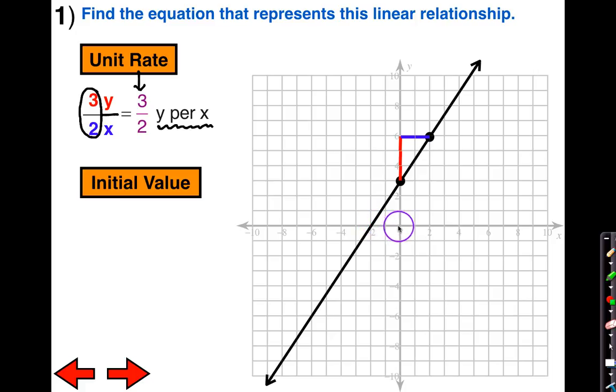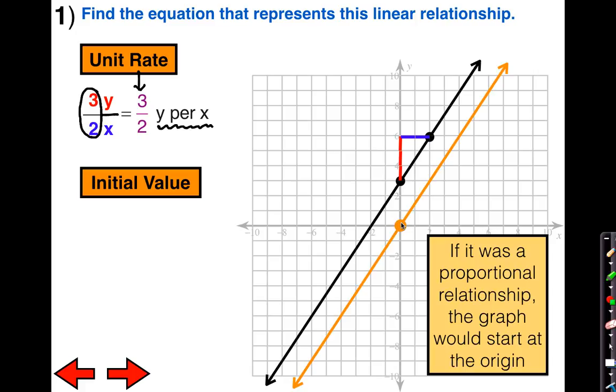This would be a proportional relationship if and only if it went through the origin. So if I drew the same exact line but made it go through the origin, this would be a proportional relationship. I would be able to determine the equation of this orange line. It would be y equals kx in that form.